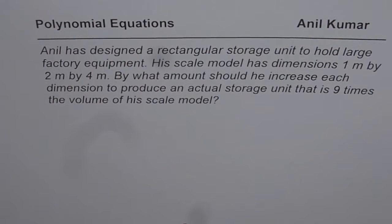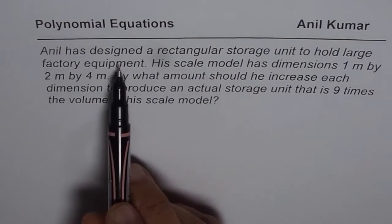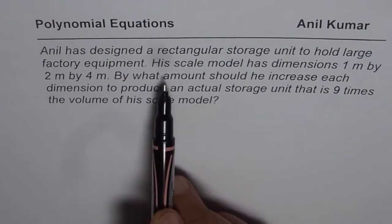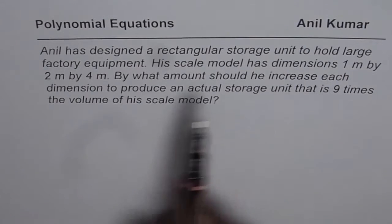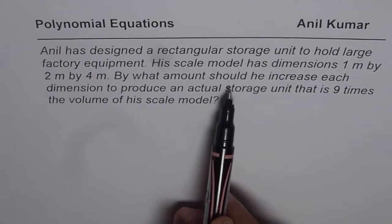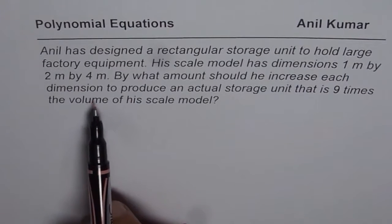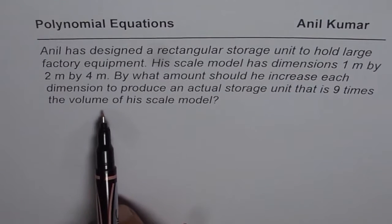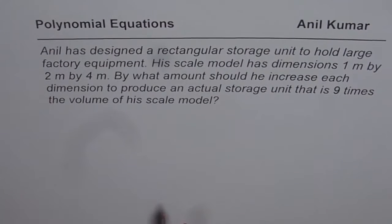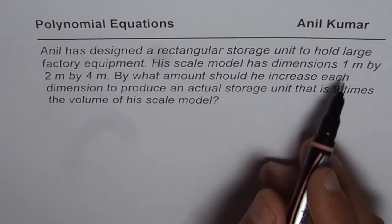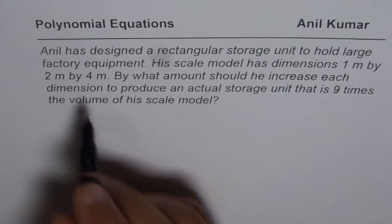Now let's get back to the question. I've just changed the name here. Anil has designed a rectangular storage unit to hold large factory equipment. His scale model has dimensions 1 meter by 2 meter by 4 meters. So basically the design could be like this: length 1, width 2 and height of 4.